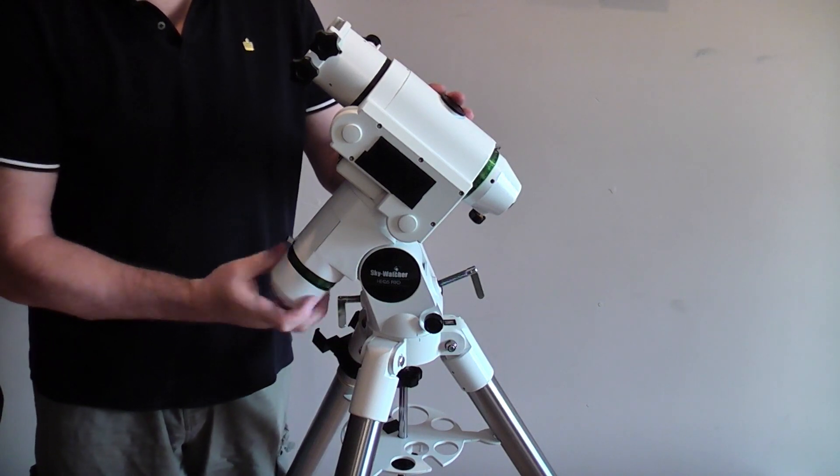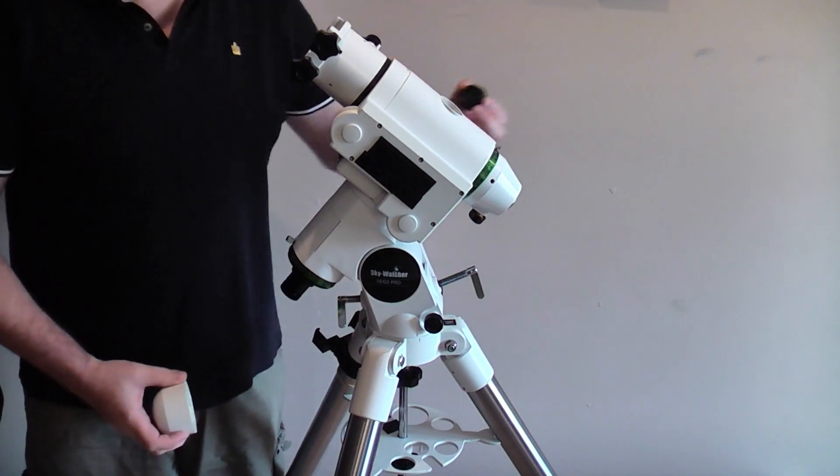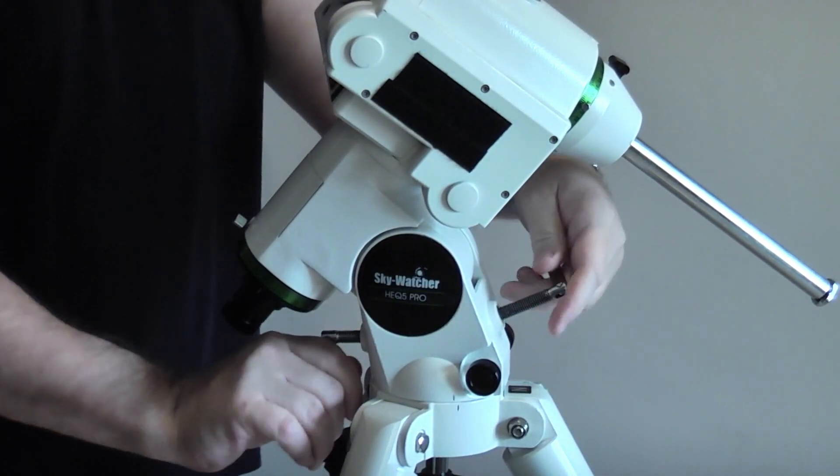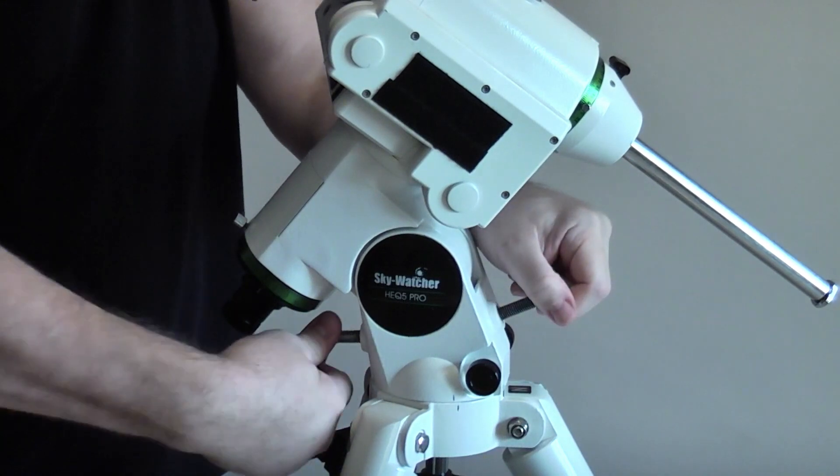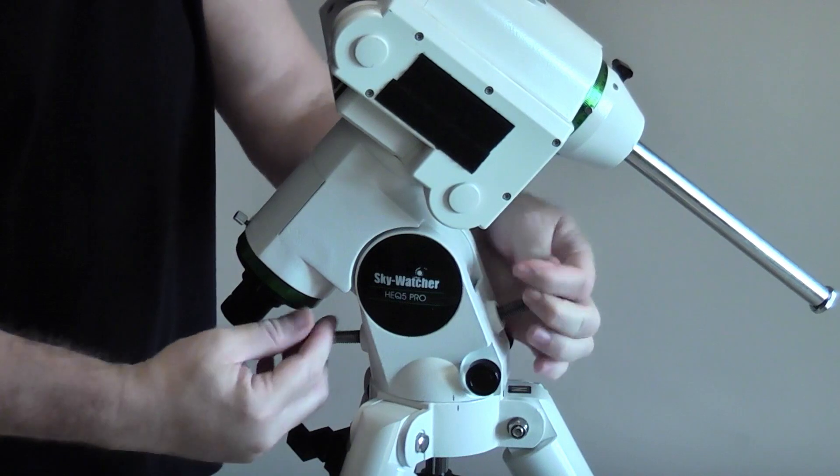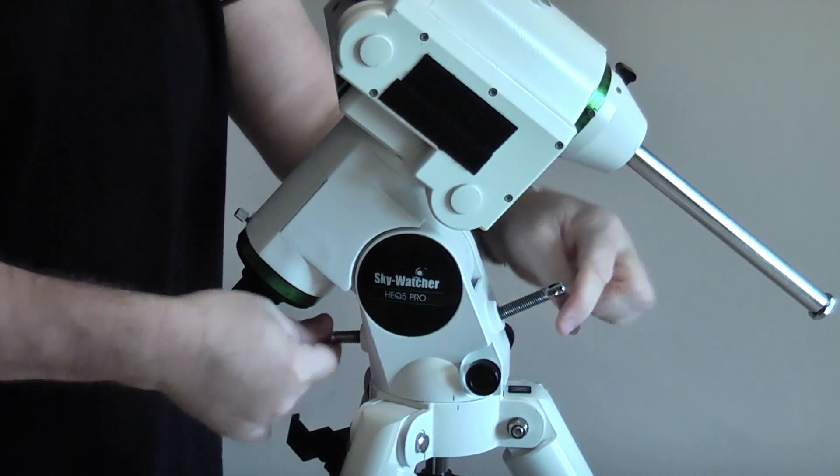So to check your polar scope calibration, take off your polar scope covers at either end and adjust your altitude screws all the way to try and make your polar scope look roughly horizontally. This is because you need to point your polar scope at a terrestrial object.